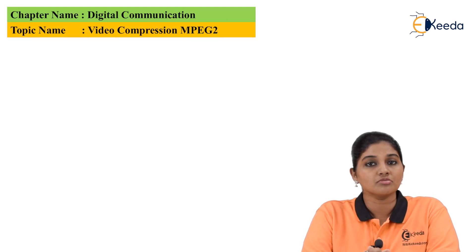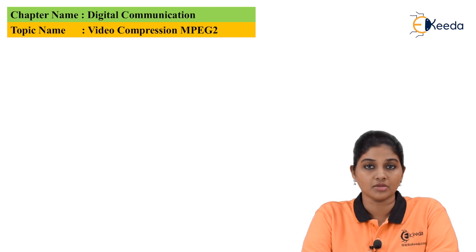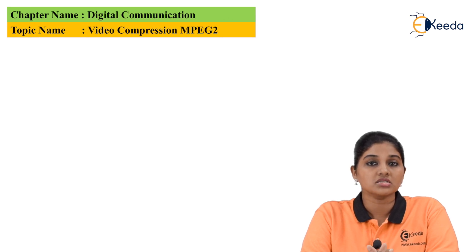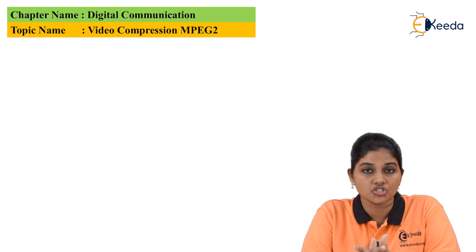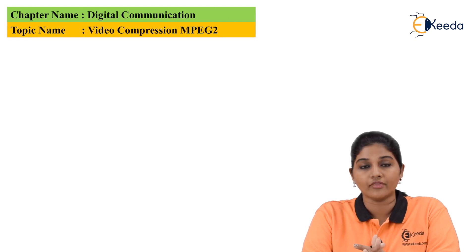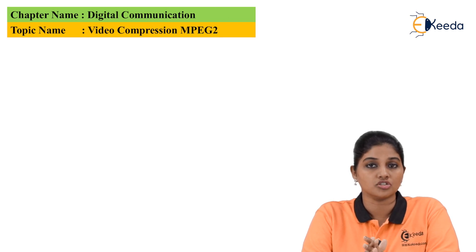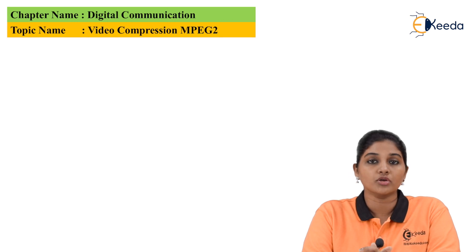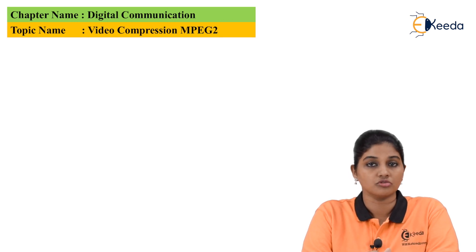The video compression method is basically divided into three different types. The first one is H.264, the second one is MPEG-2, and the next one is MPEG-4. In this topic we are specifically going to talk about video compression using MPEG-2.